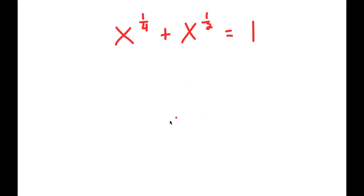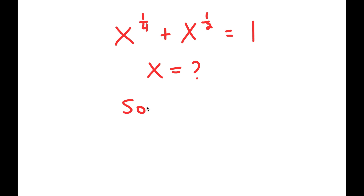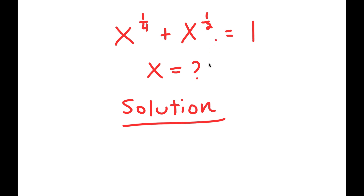Alright, so in this problem I have x to the power of one-fourth plus x to the power of one-half is equal to 1. I want to find the value of x here, so for my solution I'm going to start by rewriting my equation: x to the power of one-fourth plus x to the power of one-half is equal to 1.